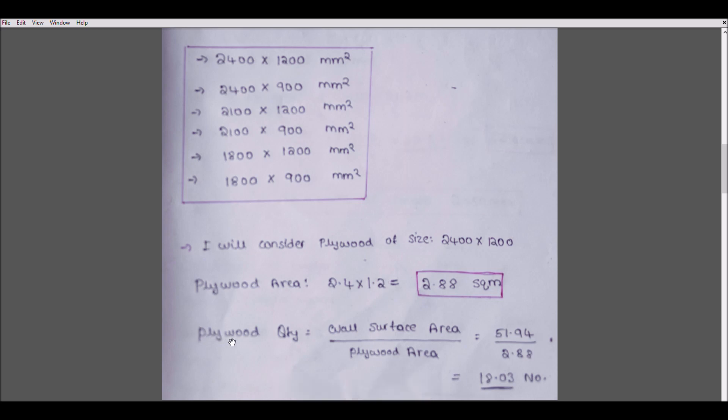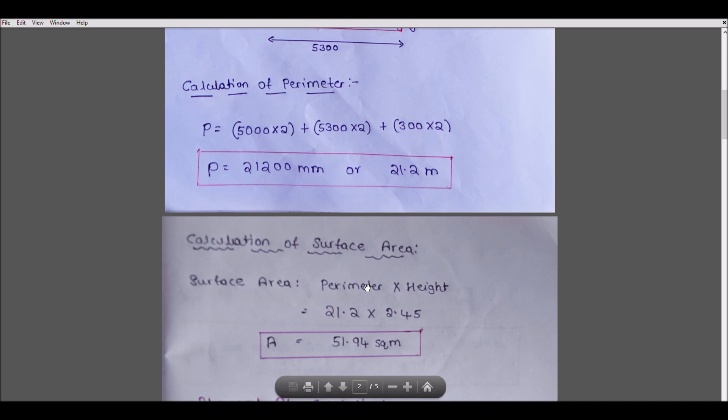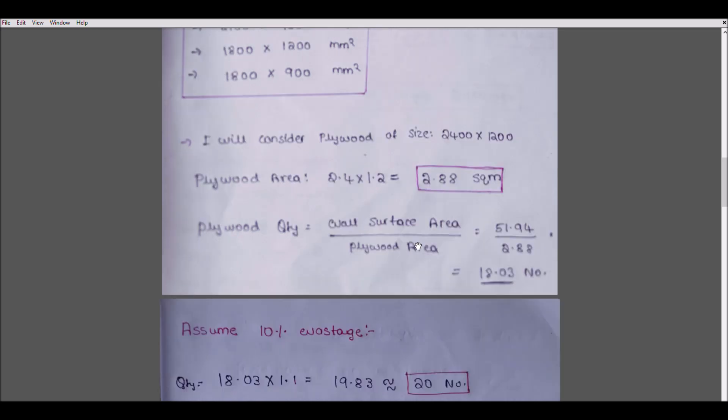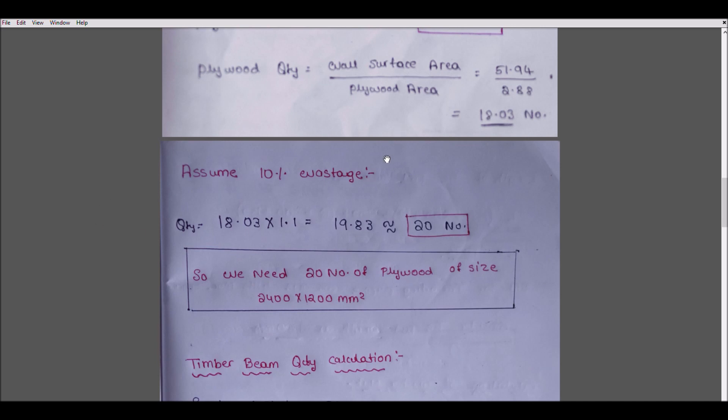The plywood quantity is the wall surface area divided by the plywood area. We calculated the surface area as 51.94, so we divide that by 2.88 to get 18.03 plywoods. But this is the exact number; we cannot say only 18.03 will come. The carpenter may make mistakes and wastage will occur. So I will consider 10% wastage. 18.03 × 1.1 gives approximately 20 numbers. If you want accuracy, I suggest you draw it in AutoCAD.